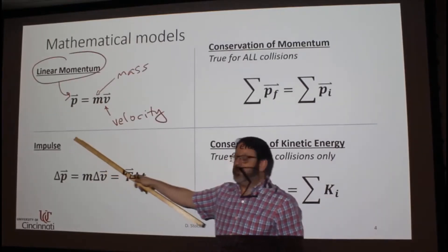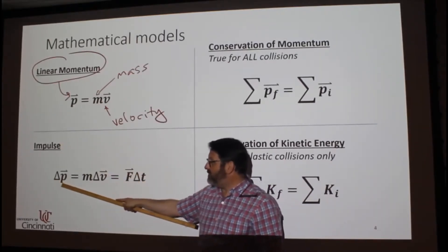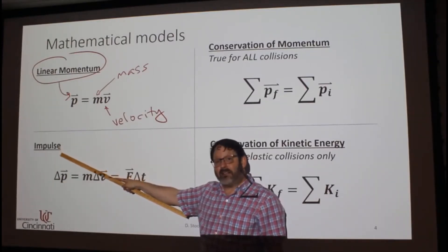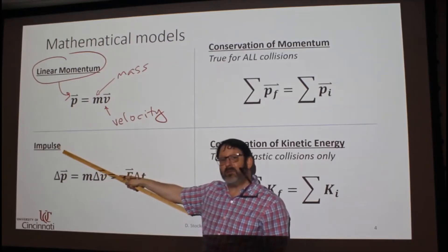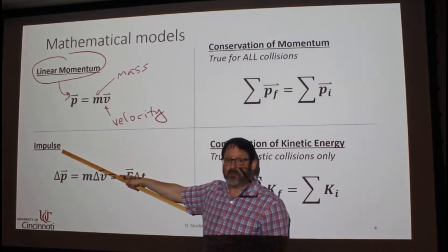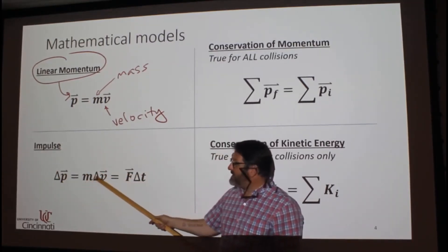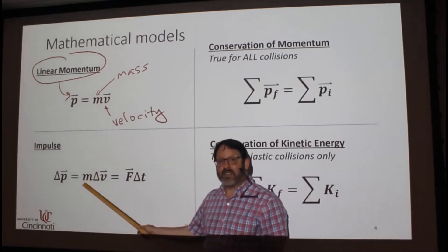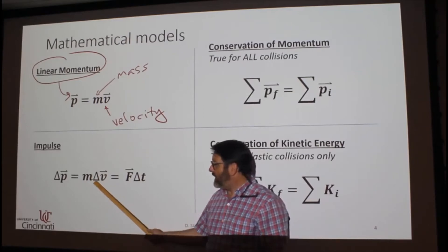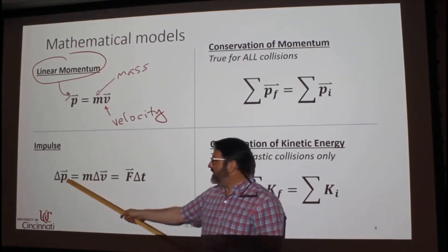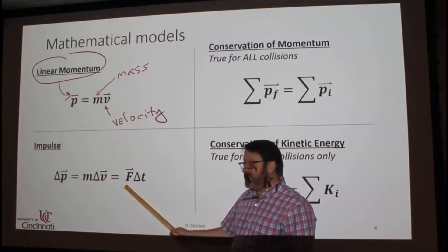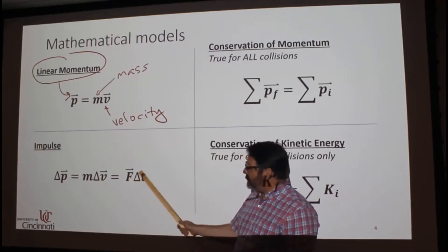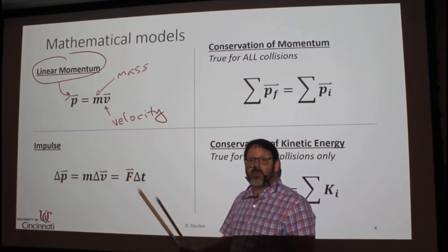Impulse. Impulse is just another word for change in momentum. Sometimes people will use a capital I to mean impulse, sometimes people use a capital J to mean impulse. So change in momentum is mass times change in velocity, because normally mass isn't changing—it's normally the velocity of something that's changing. Change in momentum is also the force, the external force that's acting on the system, times the time in which that force is acting.